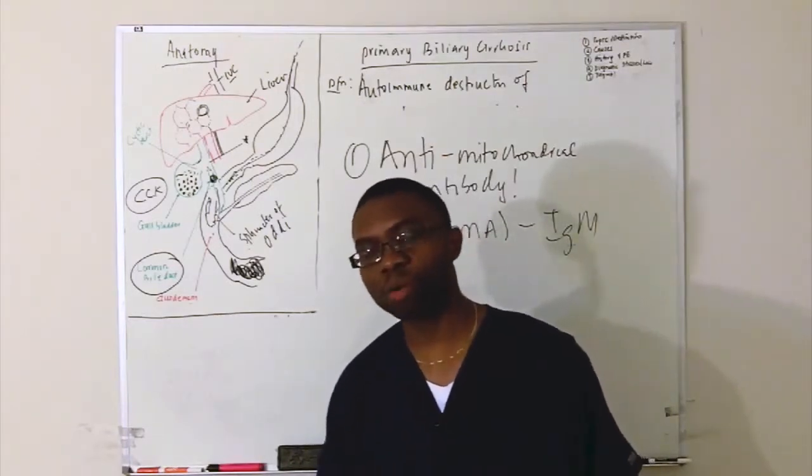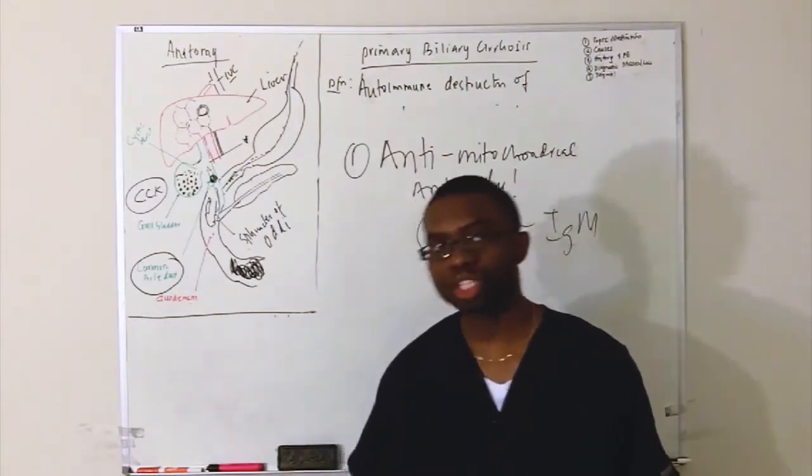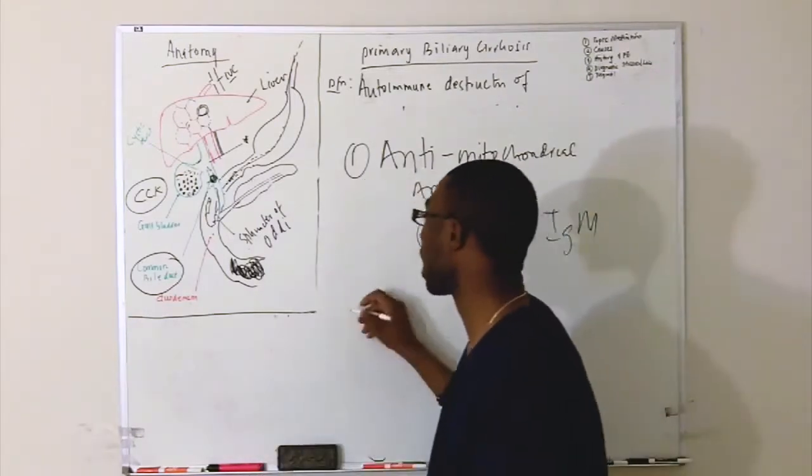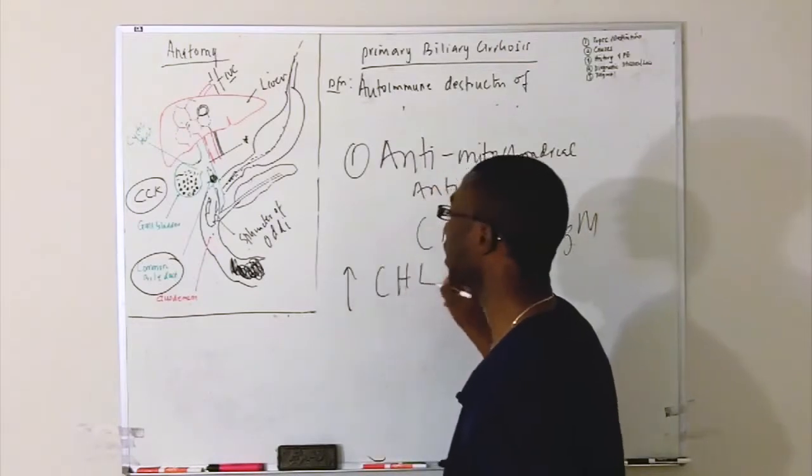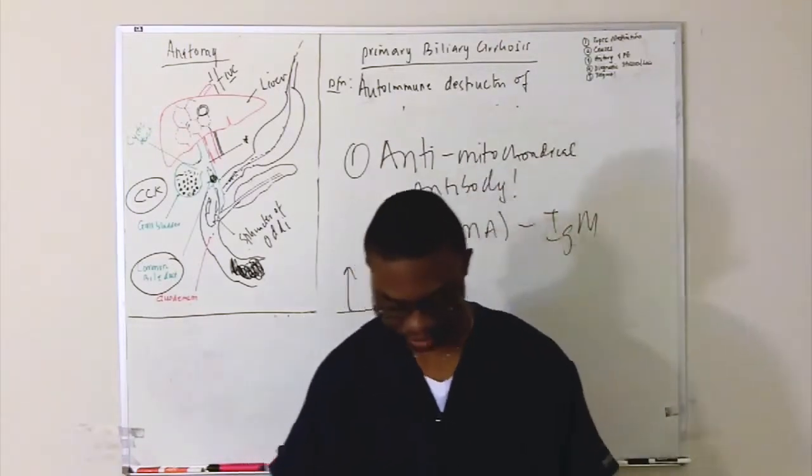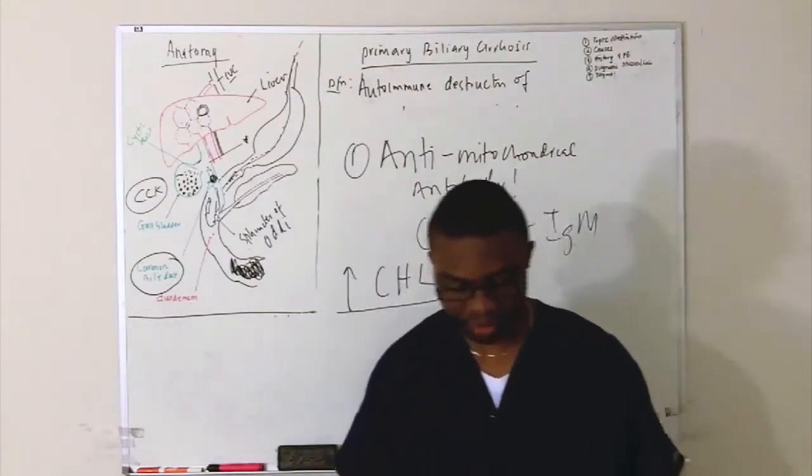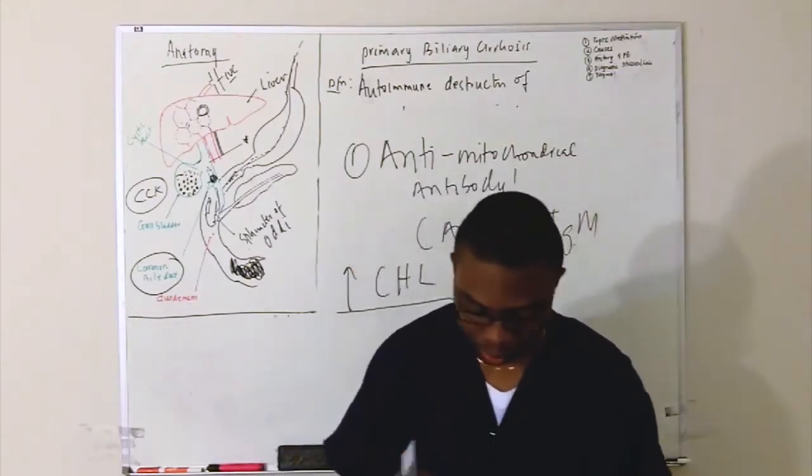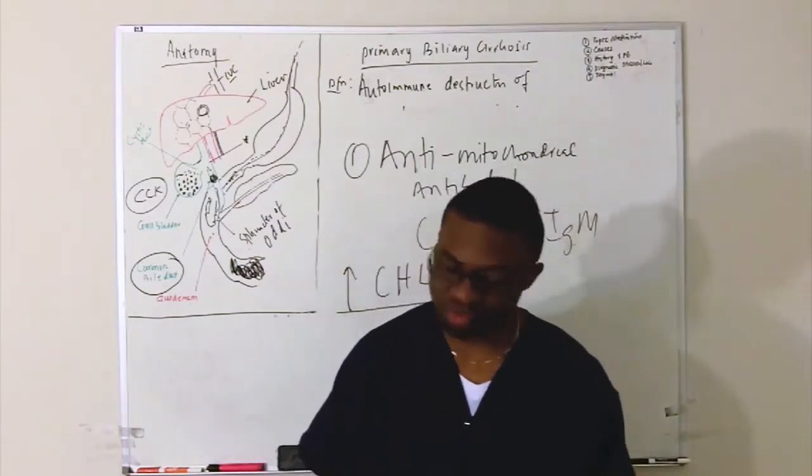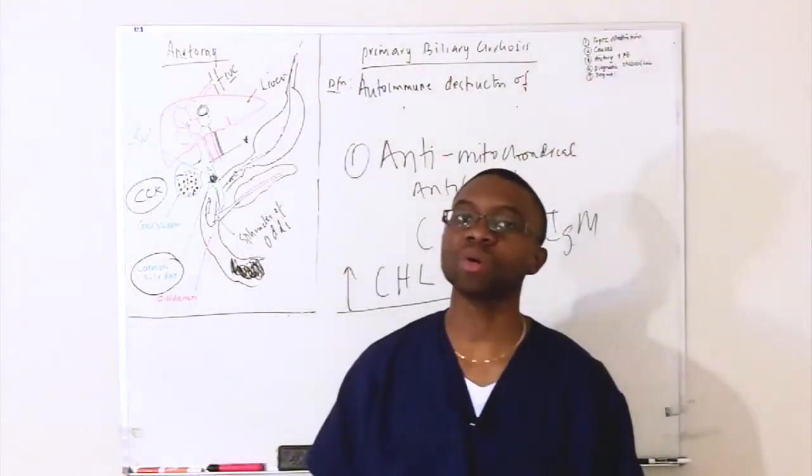If a patient is coming with right upper quadrant pain, jaundice, itching, fatigue, they've got all this cholesterol, we check their cholesterol level, it's high. High cholesterol. Remember the xanthomas they start to develop. They're also prone to osteoporosis. That's another thing you want to know. But how do we really, really drill this down and know the definite diagnosis?